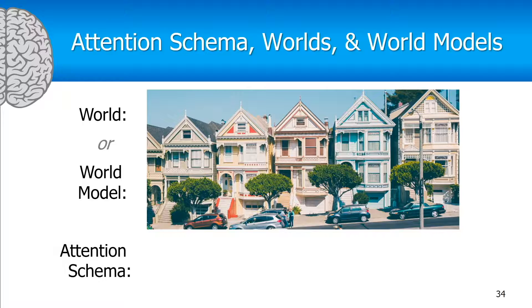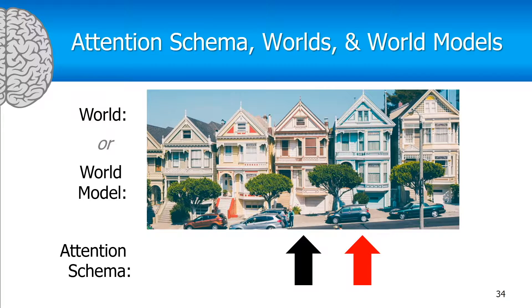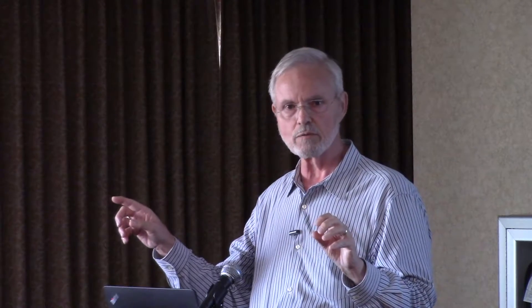Now let's look at the effect of attention on world models. The real world out there doesn't have colors in it, but the world model you see here does have colors in it. If you keep your eye on the center house and use your peripheral attention to shift around, the world doesn't change — and the world model doesn't change either. Keep your center of vision on the center house, then direct attention to the house on the right, then to the house on the left, and back to center. What changes is that when you pay attention to something, you can see more information and more details about that object.